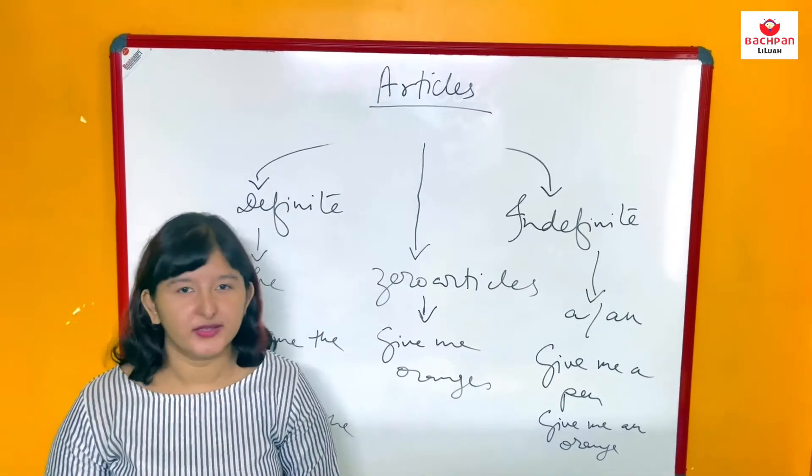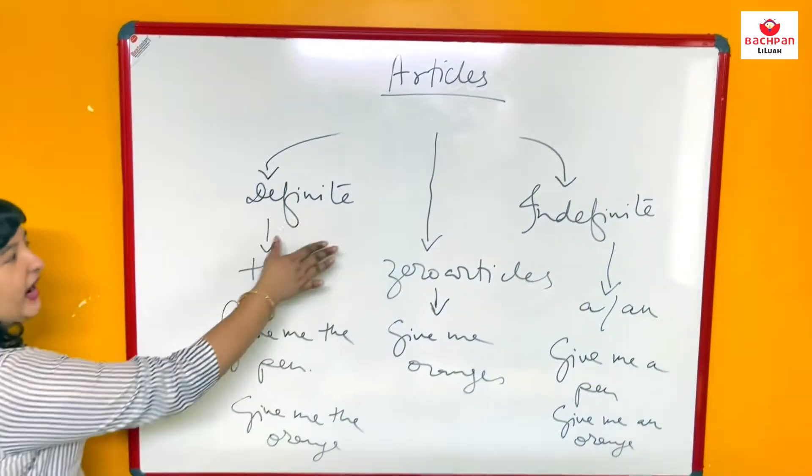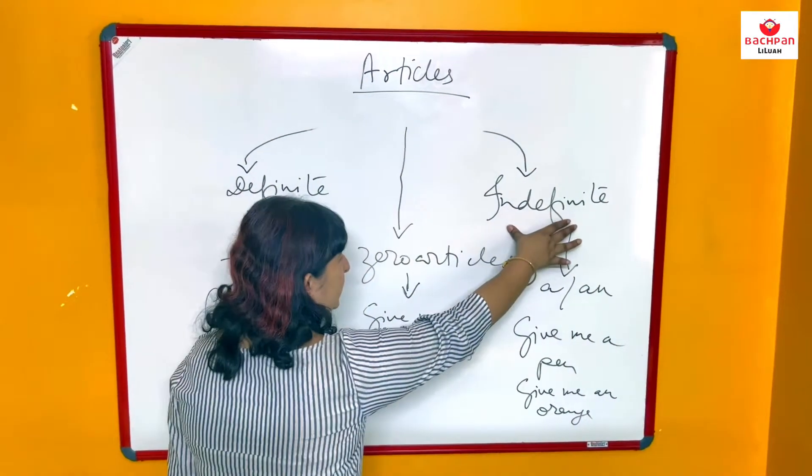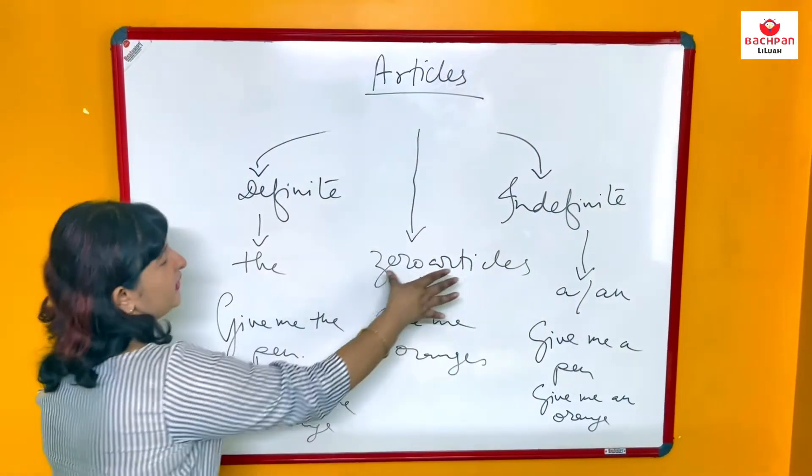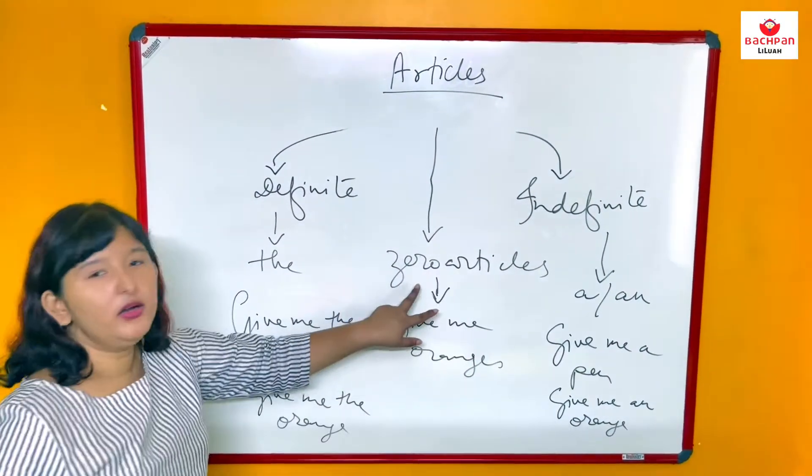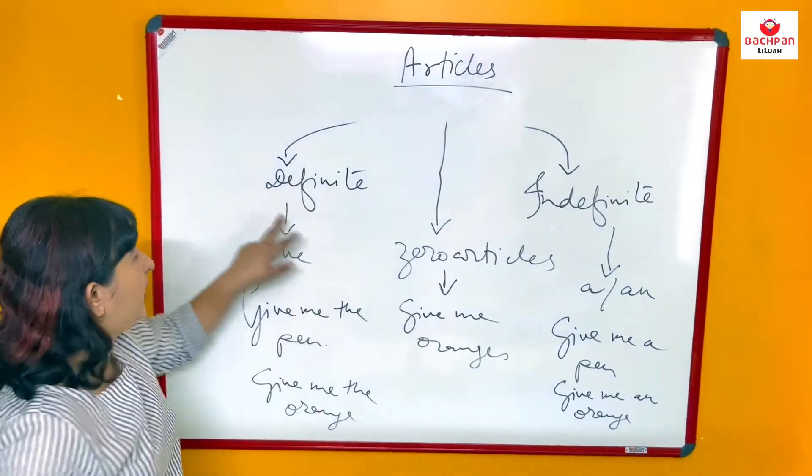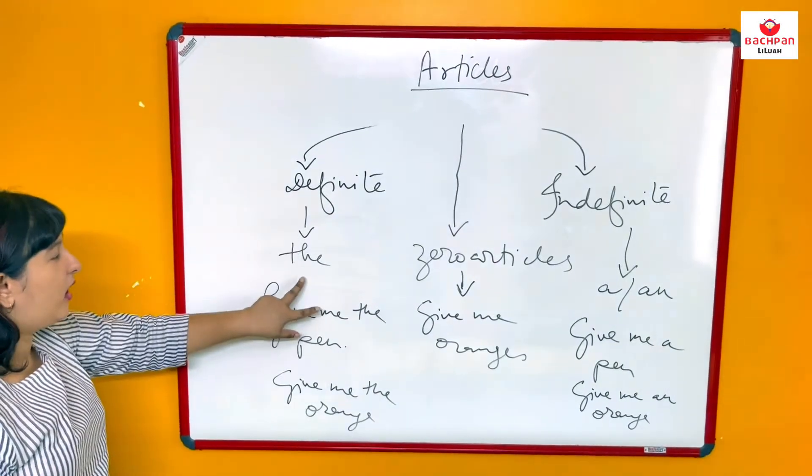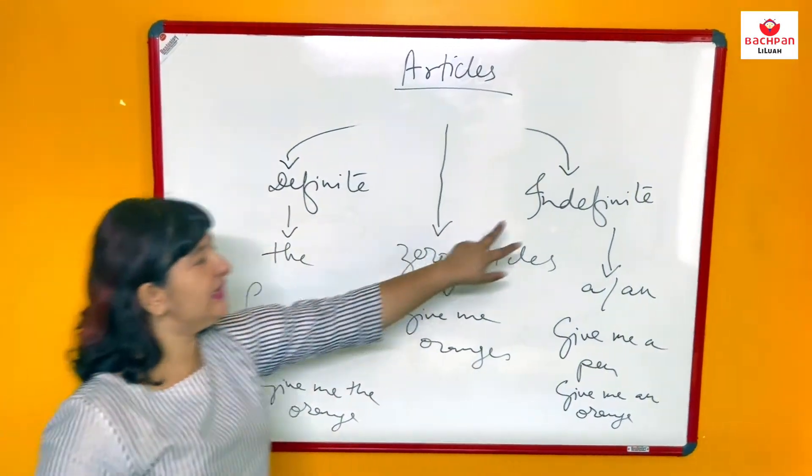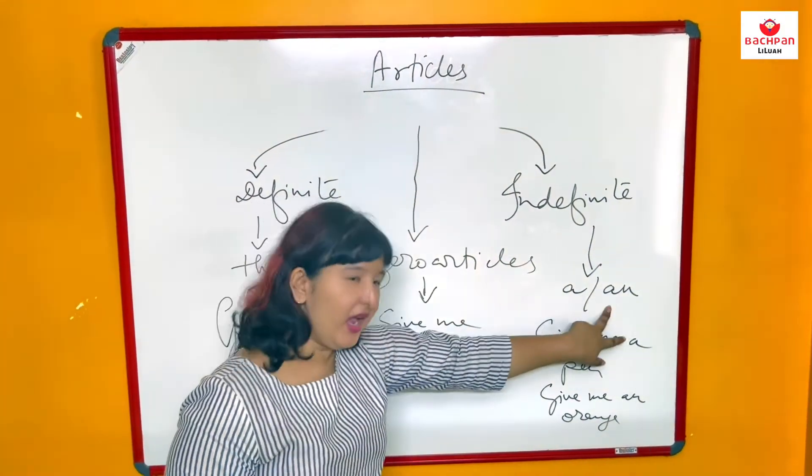Now let us see what are the types of articles. We have definite articles, we have indefinite articles, and the third case is for the zero articles. Now definite article is the, whereas indefinite article is a and an.